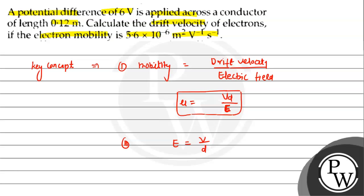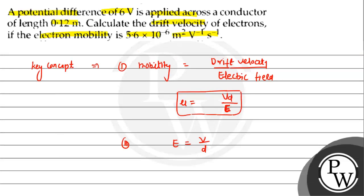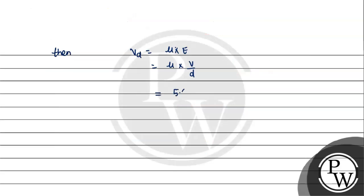Here, d is the length of the conductor and V is the potential difference. So drift velocity Vd equals mu into E, which becomes mu into V upon d. Substituting values: mu is 5.6 into 10 to the power minus 6, V is 6 volts, and d is 0.12 meter.